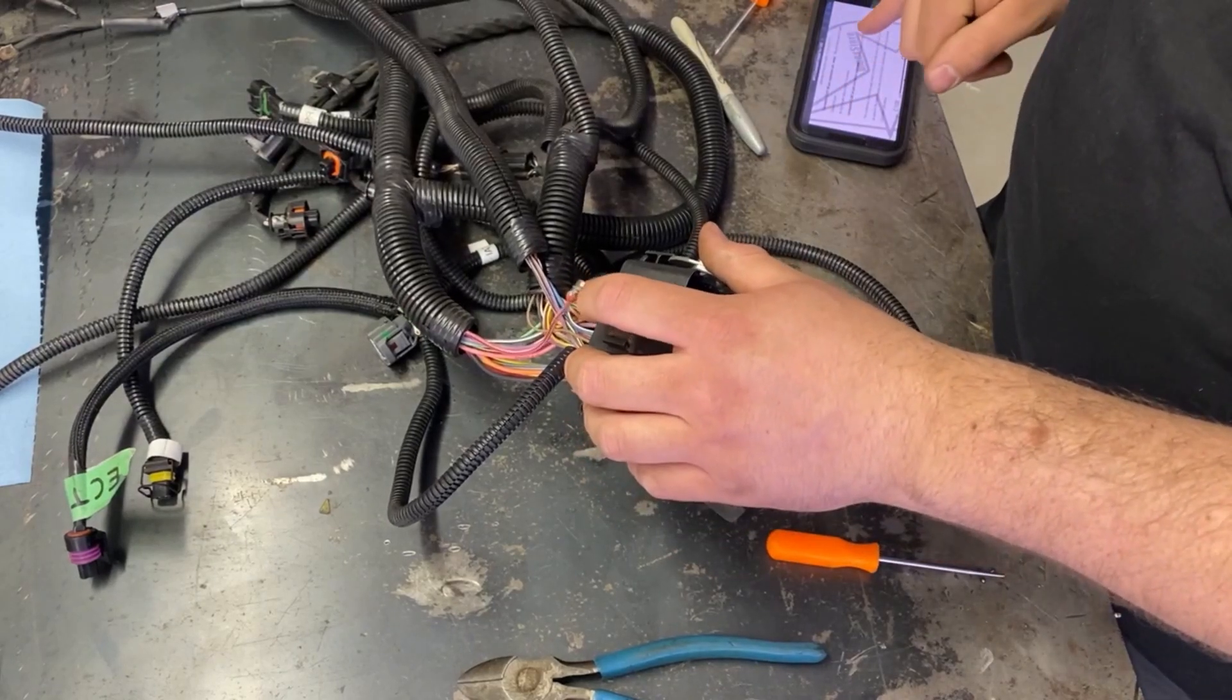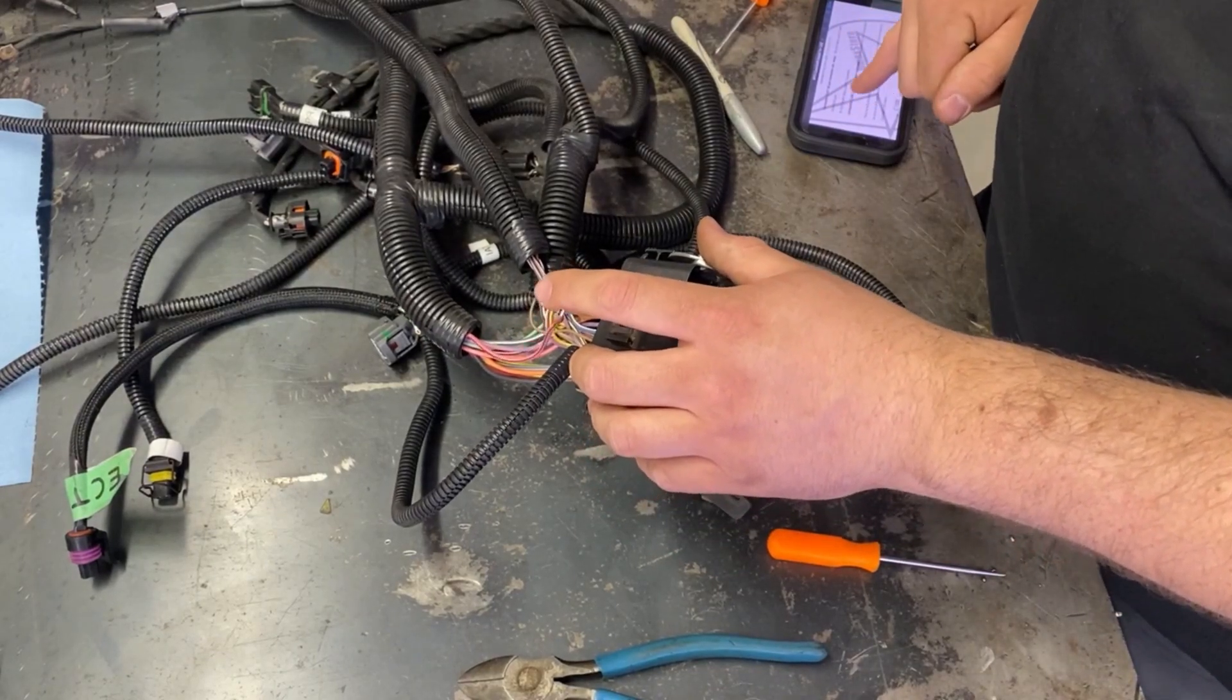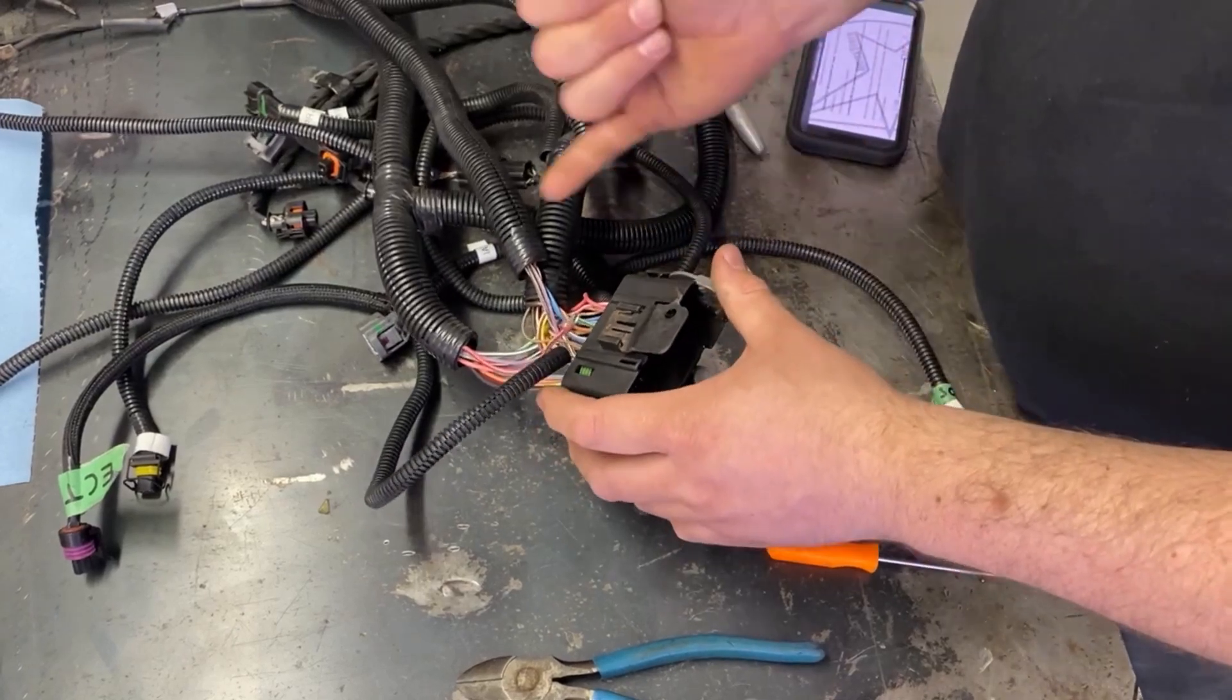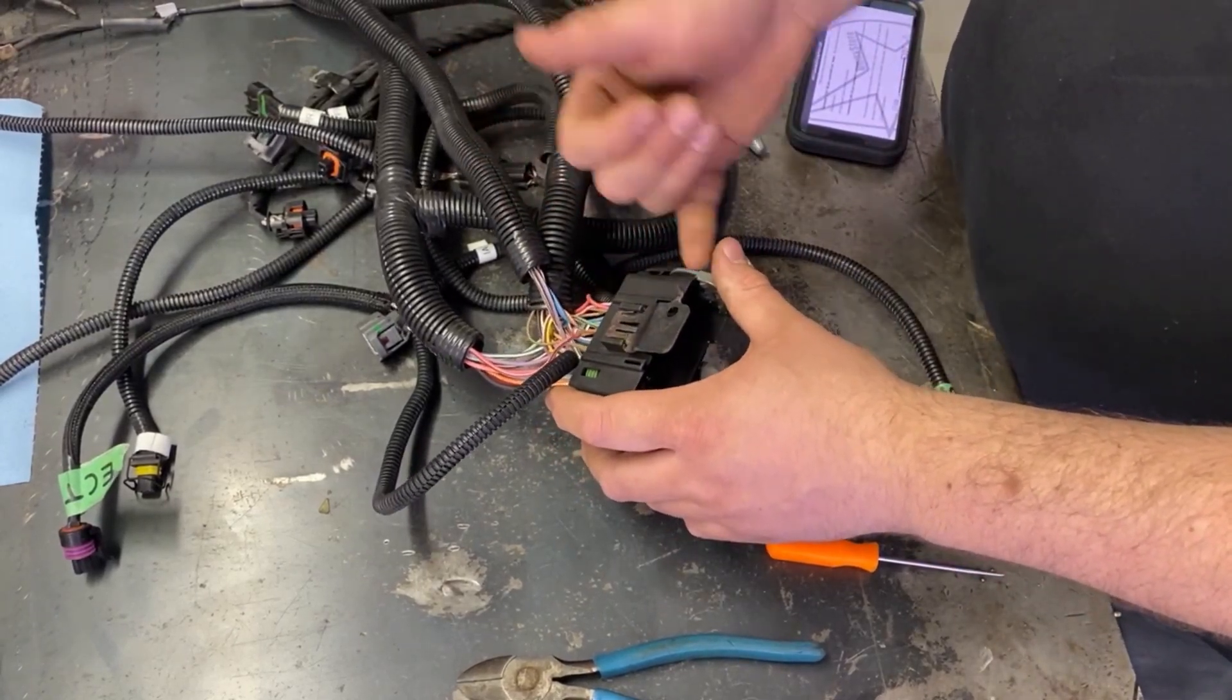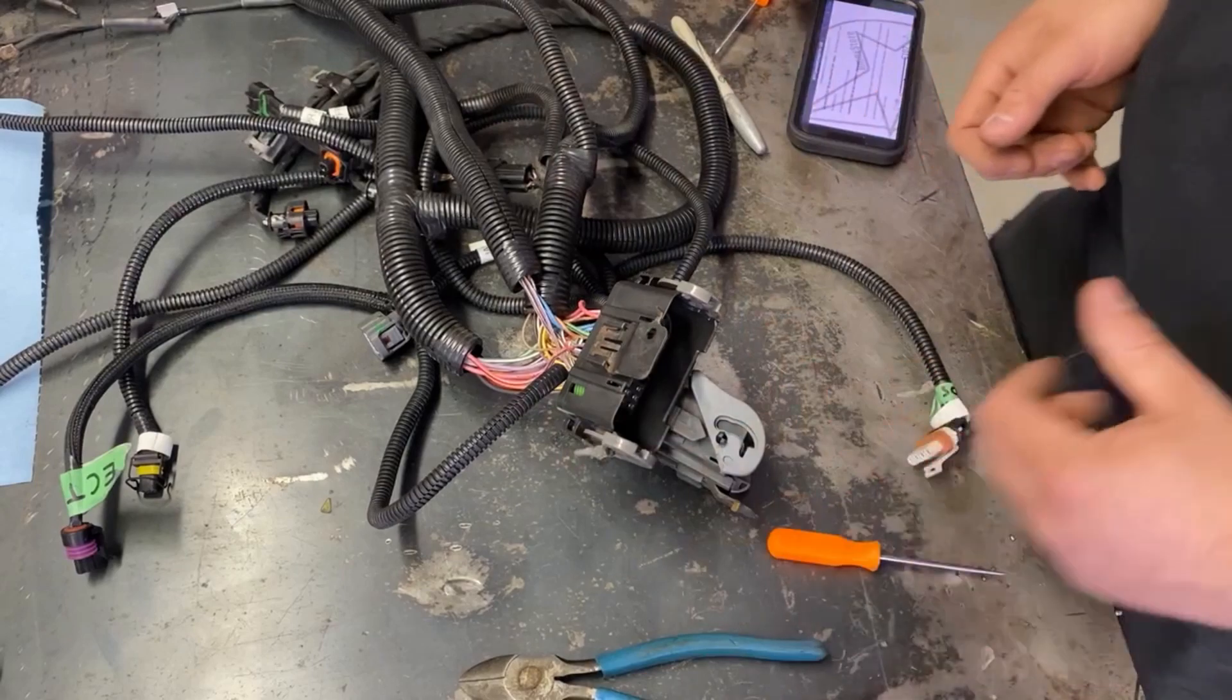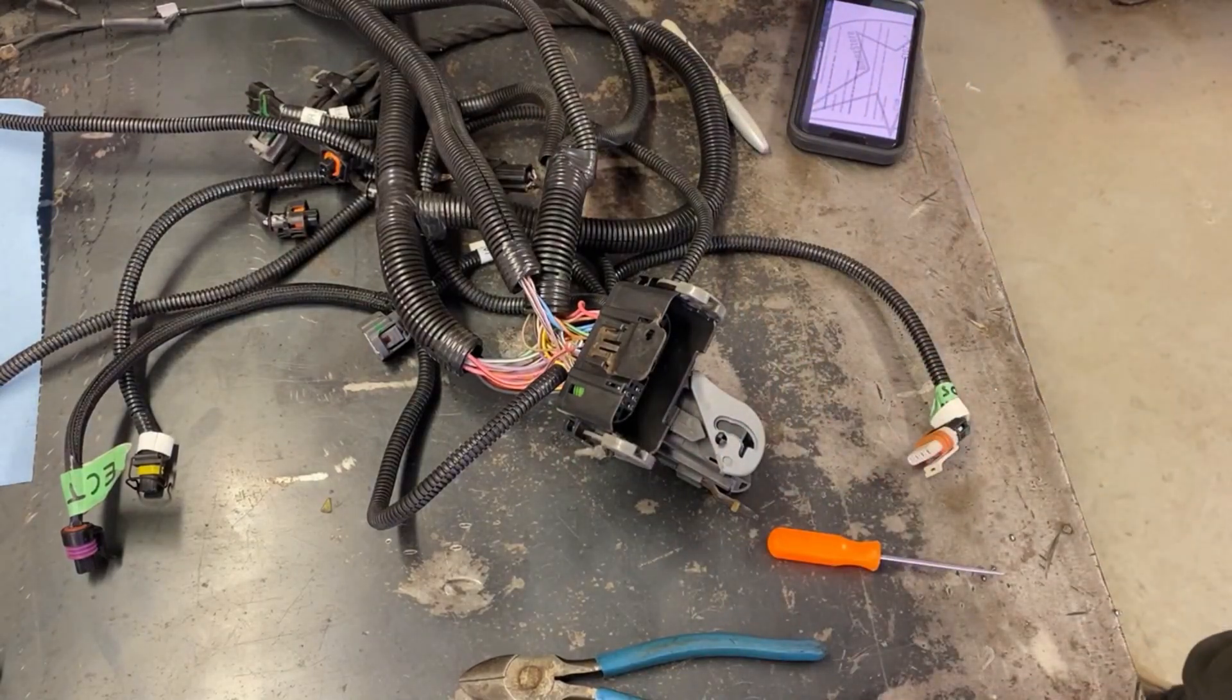The next one we're going to take out is A5, which is dark blue and white. We'll put the dark blue one where this one just came out of and the pink one back where the dark blue one comes out of. Shout out to the $1.79 Harbor Freight pick set.